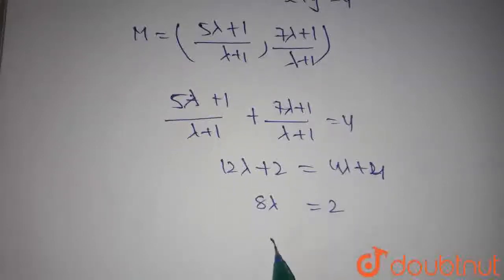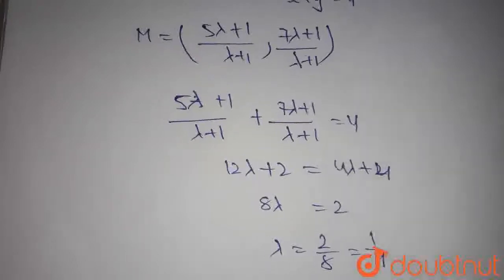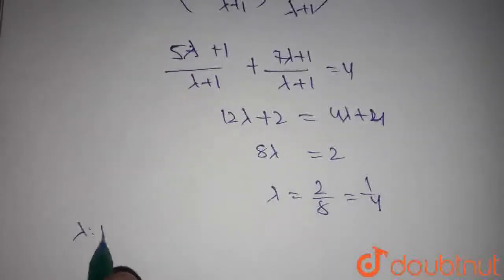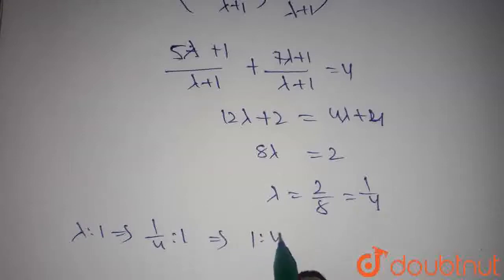Then we get lambda equals 2 by 8, which equals 1 by 4. Then, lambda is to 1 becomes 1 by 4 is to 1, which is nothing but 1 is to 4.